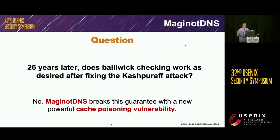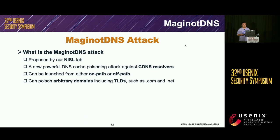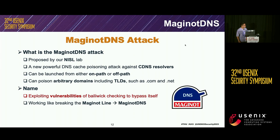Unluckily, the answer is no. We find that MarginalDNS breaks this guarantee with a more powerful cache poisoning vulnerability. MarginalDNS can be launched from either on-path or off-path and can poison a whole TLD. We exploit vulnerabilities in bailiwick checking itself to bypass it — working like breaking the marginal line — which is why we name it MarginalDNS.